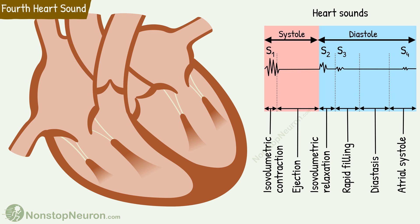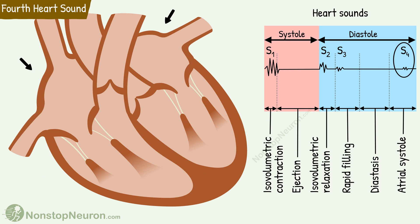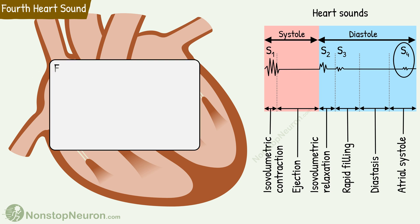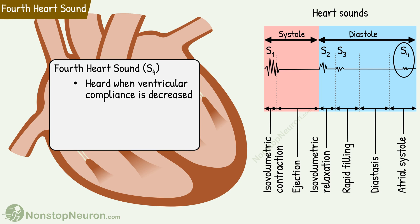Now the final one — the fourth heart sound. It coincides with atrial contraction. It's heard in pathological conditions in which ventricular compliance is decreased, or in simple words, ventricles do not dilate easily. In such conditions, atria contract more forcefully to fill the ventricles, and this produces the fourth heart sound. When this sound is added to the first and second heart sounds, the resultant sequence S4, S1, S2 is also a galloping rhythm. This one is called presystolic gallop or atrial gallop.